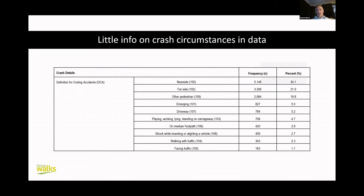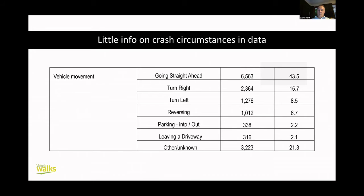Unfortunately, there's a problem with the way we collect and collate and report pedestrian crashes. The way pedestrian crashes are classified is really quite unhelpful — largely classified as near side, far side, or other, which tells us nothing about the circumstances. We can get a slightly clearer picture when we look at vehicle movement, which tells us that vehicles going straight ahead are the biggest cause of crashes, but right turn crashes are also very significant, and to a lesser extent left turn and reversing crashes.